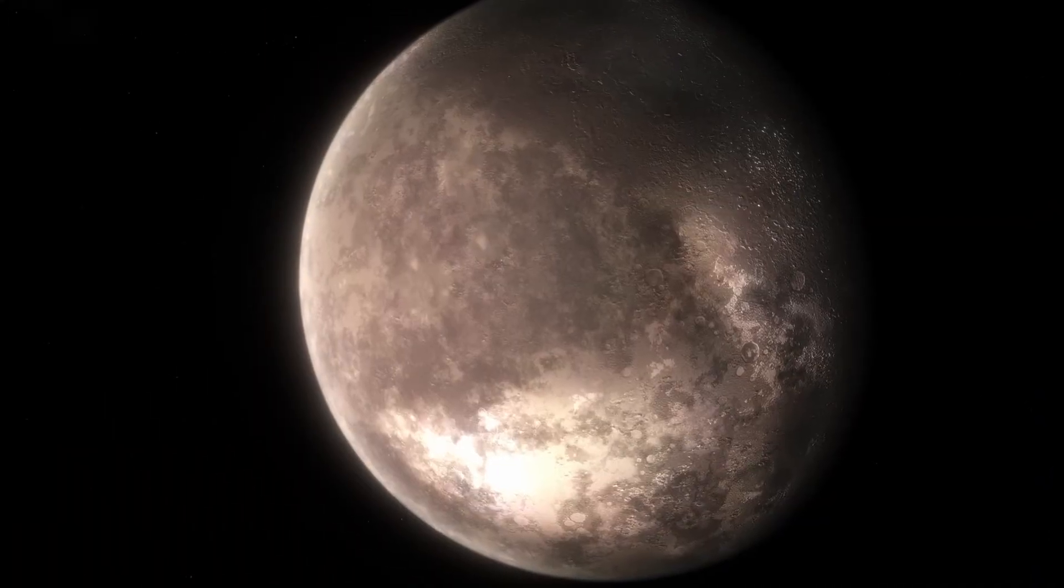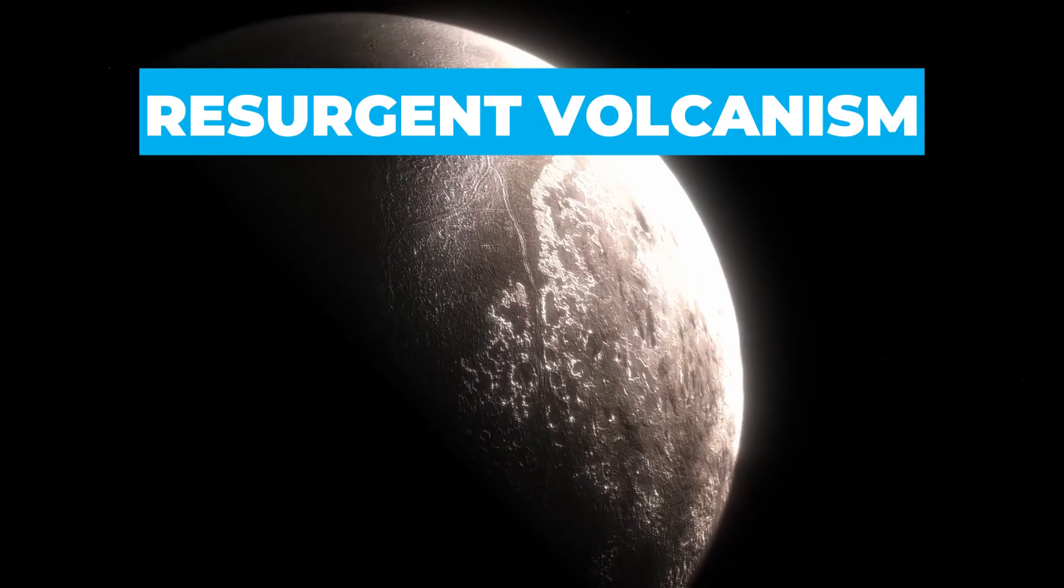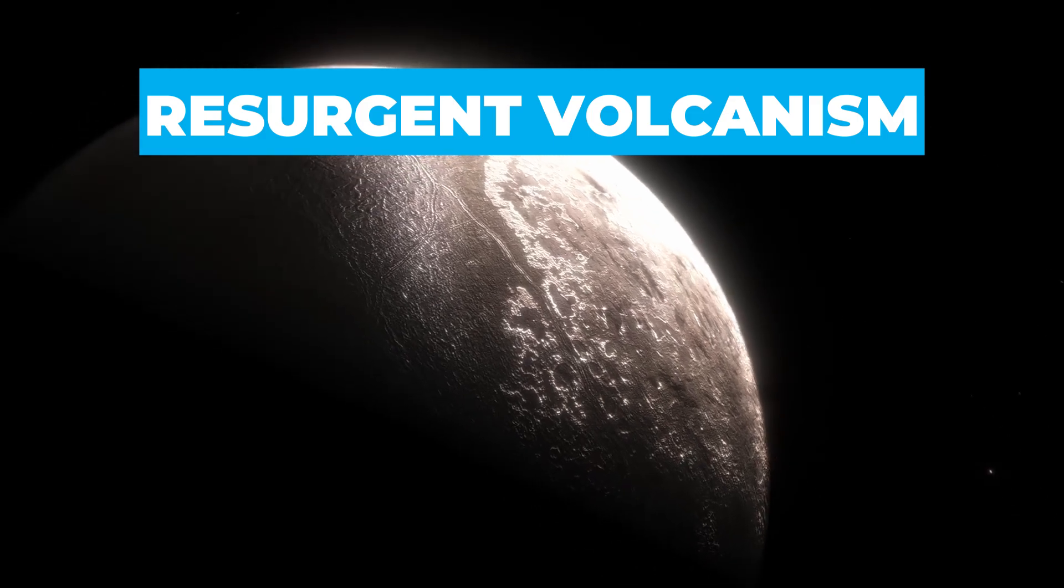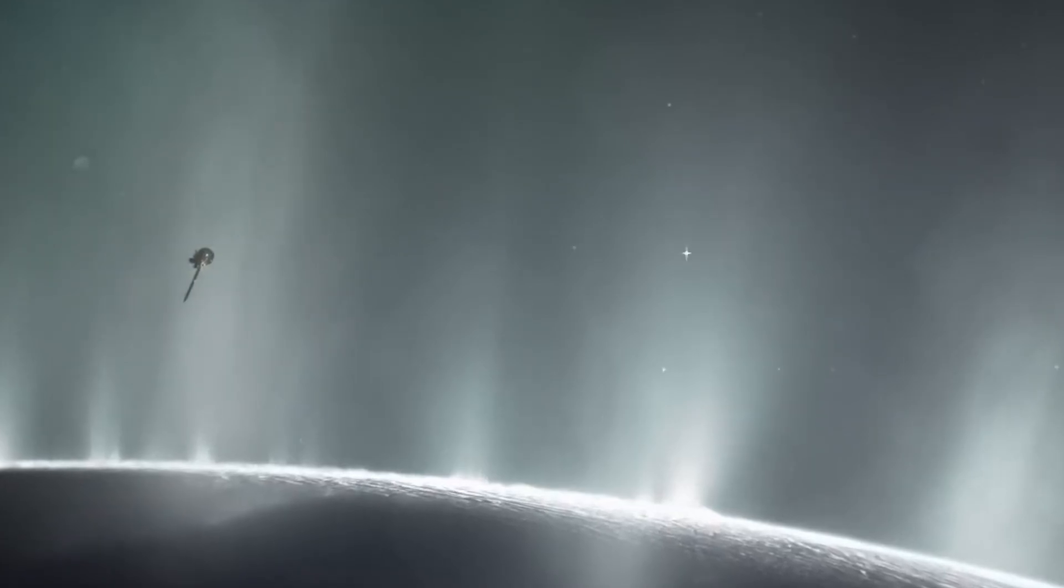This feature is believed to result from resurgent volcanism with the caldera surrounded by flat topographies that are possibly lava flow fields. Evidence of cryovolcanism includes plumes seen on Enceladus and Europa, along with surface characteristics like domes and vents.